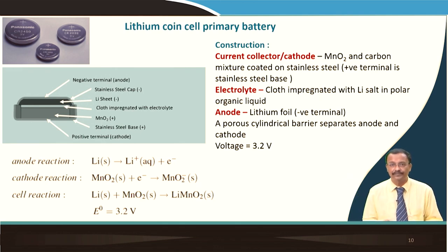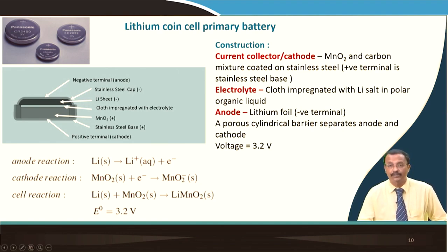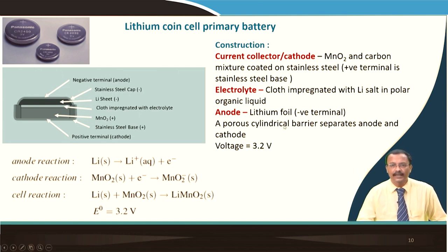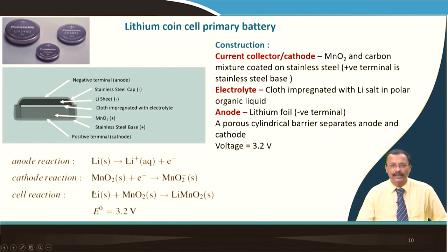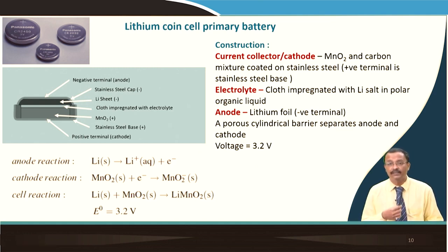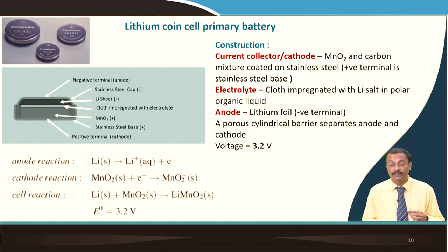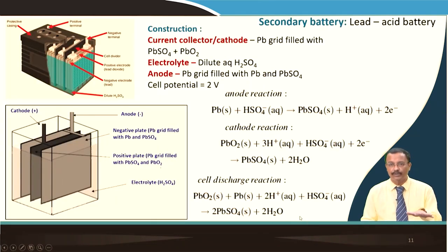With aqueous electrolytes, the voltage is limited because water can dissociate if you go beyond a certain voltage. Lithium, however, is highly electropositive, which leads to a relatively large voltage. The reaction is straightforward: lithium is oxidized, manganese is reduced, and the overall cell reaction gives a standard EMF of 3.2 V — significantly higher than the 1.5 V of dry cell or alkaline cell.